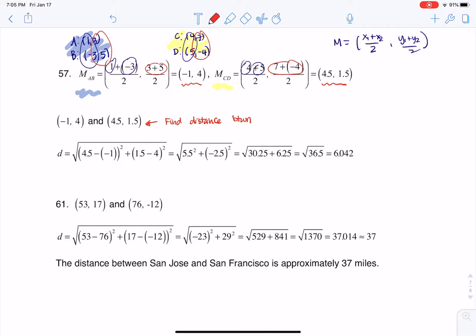And the distance formula that we have is that d is equal to the square root of the difference in the x-coordinates added to the difference in the y-coordinates.